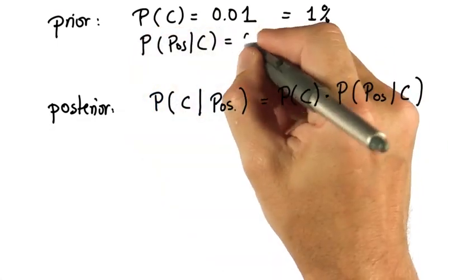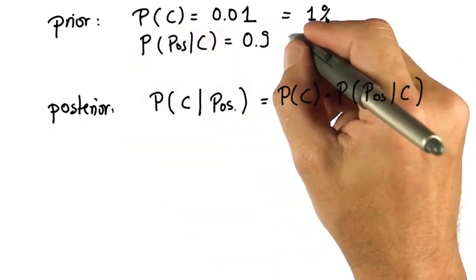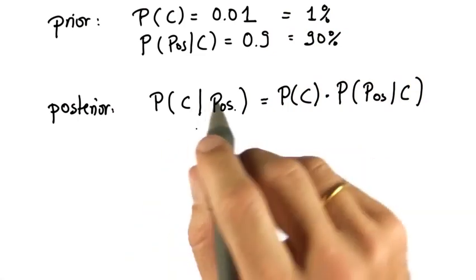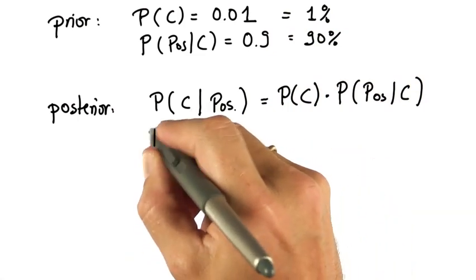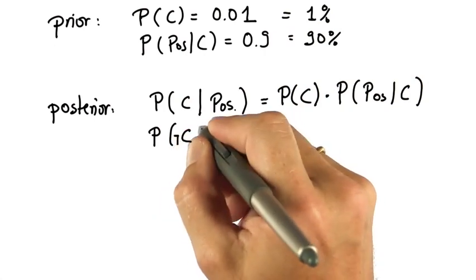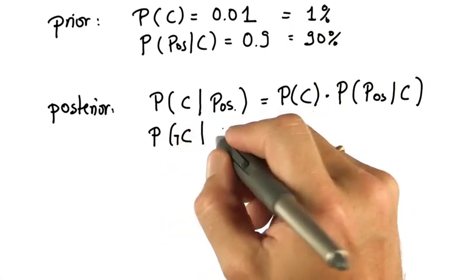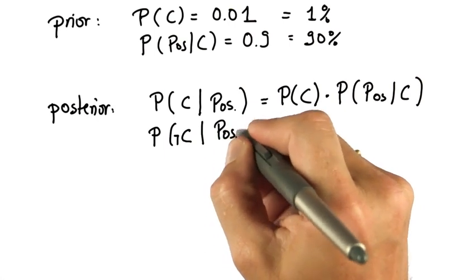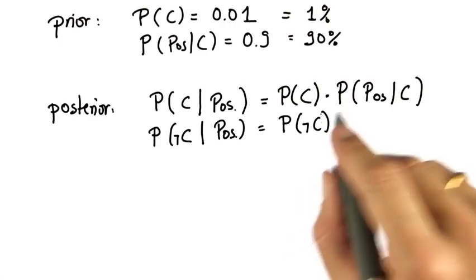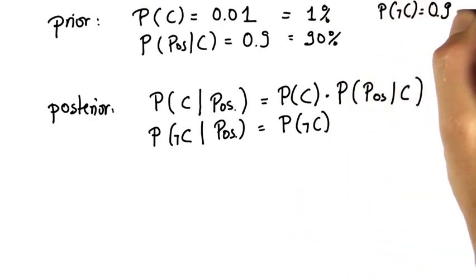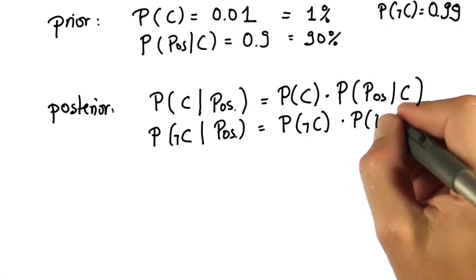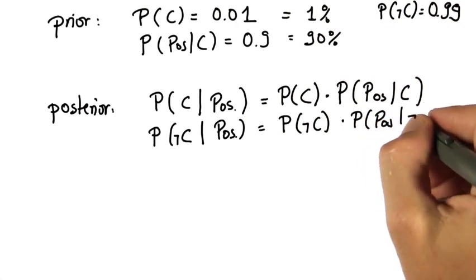And you might remember this was 0.9 or 90%. Now just to warn you, this isn't quite correct. To make this correct, we also have to compute the posterior for the non-cancer option, written here as not cancer given a positive test. And that's using the prior. We know that P of not C is 0.99. It's 1 minus P of C times the probability of getting a positive test result given not C.